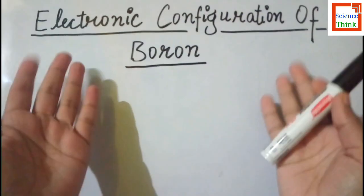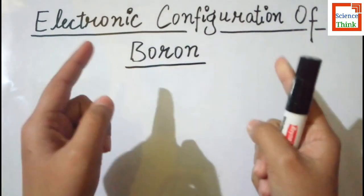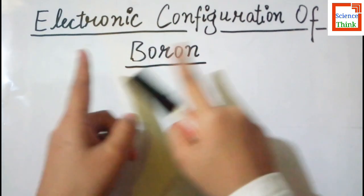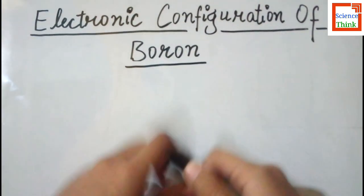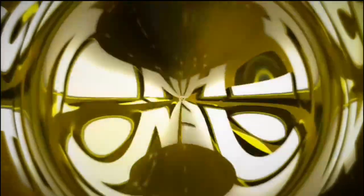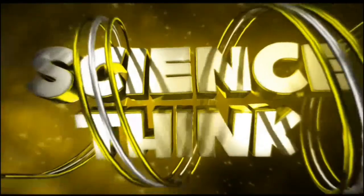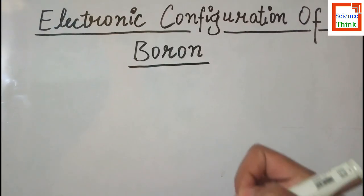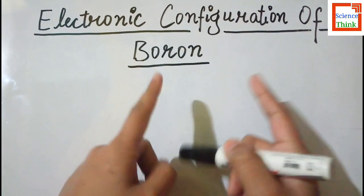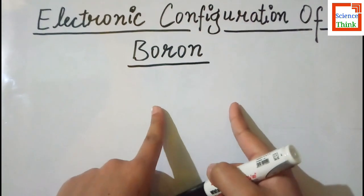Hello friends, welcome to Science Think. In this video I'll tell you how to write the electronic configuration of boron. So let's start the video. To find the electronic configuration of boron, first we need to find the total number of electrons of boron.